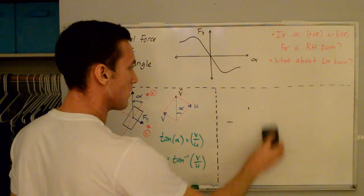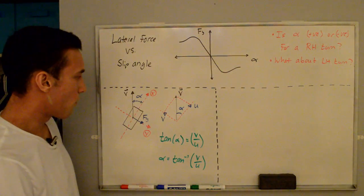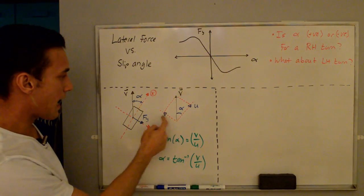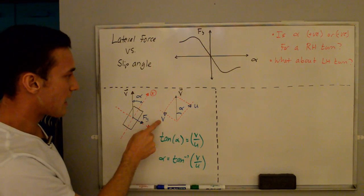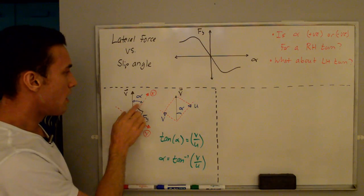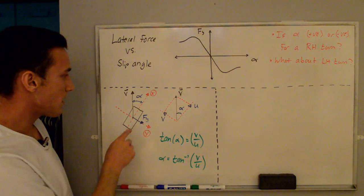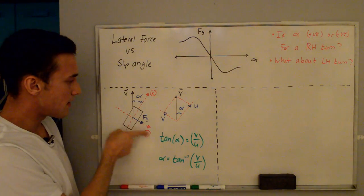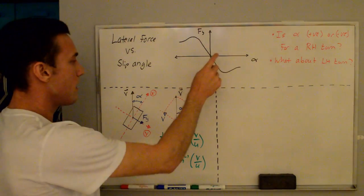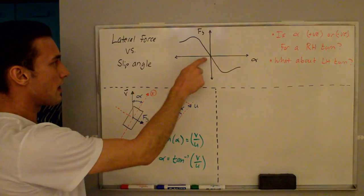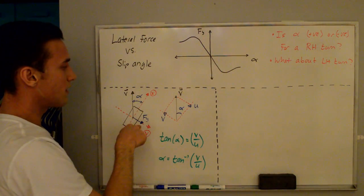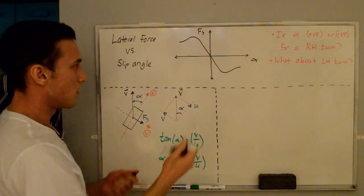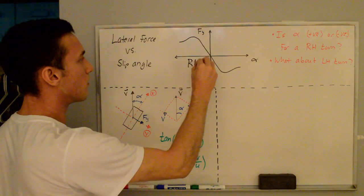For the right-hand turn, we know v is pointing in the opposite direction to the positive Y axis, so v is negative. That means for a right-hand turn, we have a negative slip angle. The lateral force produced is pointing in the positive Y direction. So with a negative slip angle and a positive lateral force, the data appears in the second quadrant — negative alpha, positive F sub Y. That's the right-hand turn region of the plot.